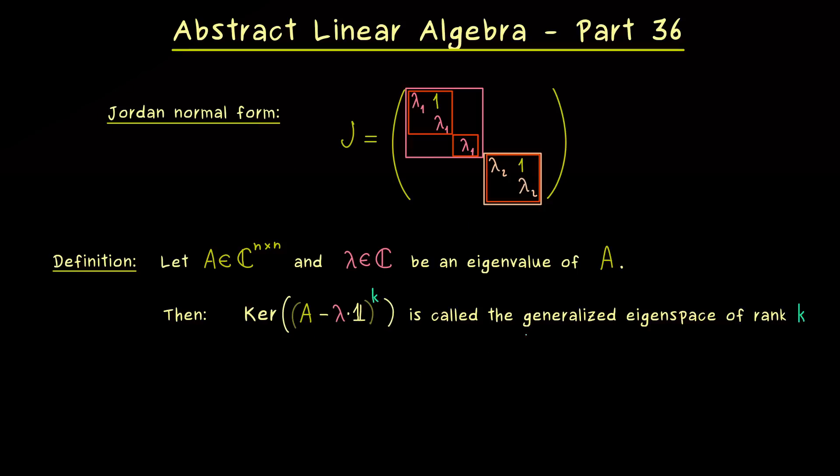And as we will see soon this is actually the correct step into the direction of the Jordan Normal Form. Hence we introduce a new name here. This is what we call the generalized eigenspace of rank k. So in particular this means if we have rank 1 we have our ordinary eigenspace again. And moreover now we also want to talk about generalized eigenvectors as well.